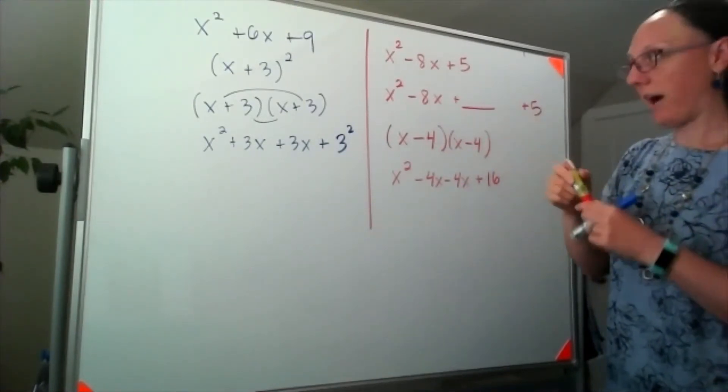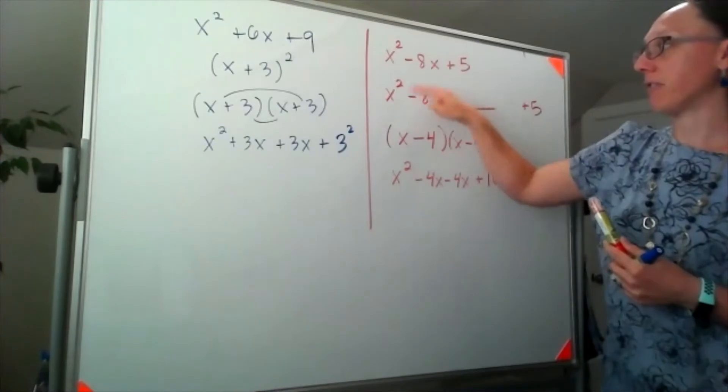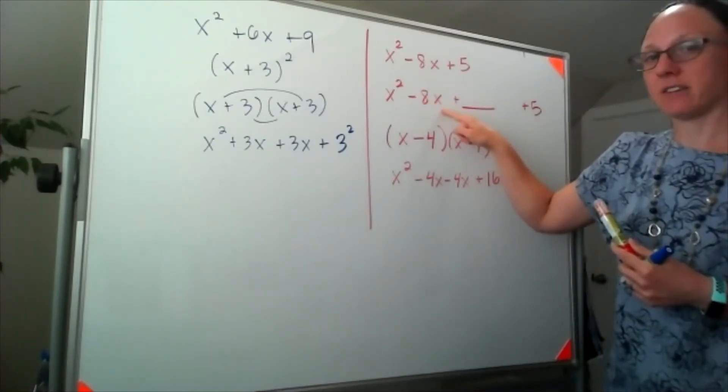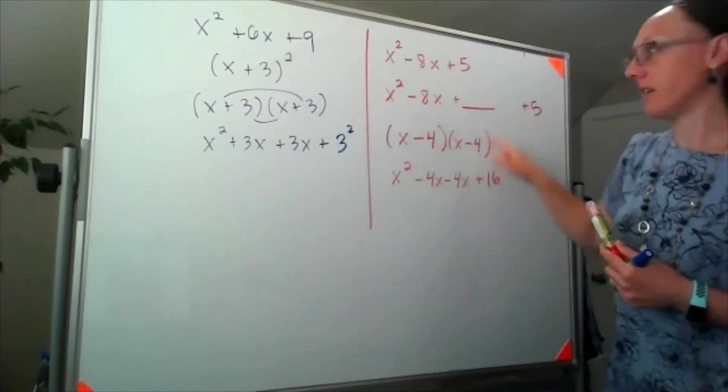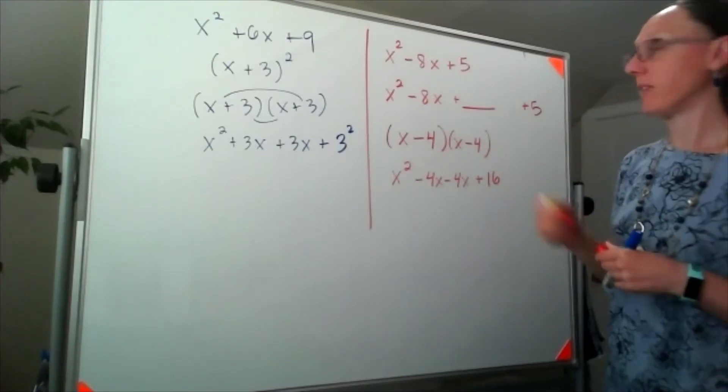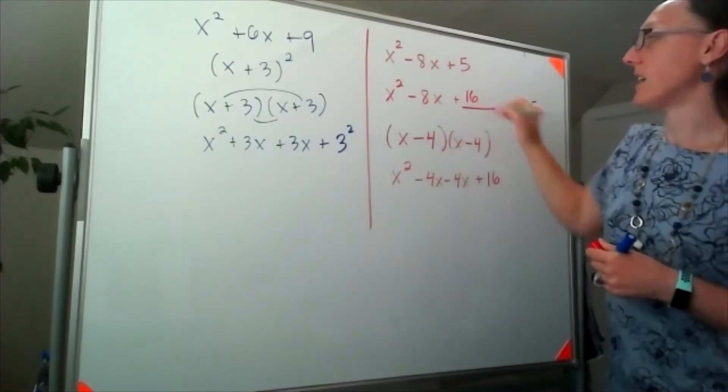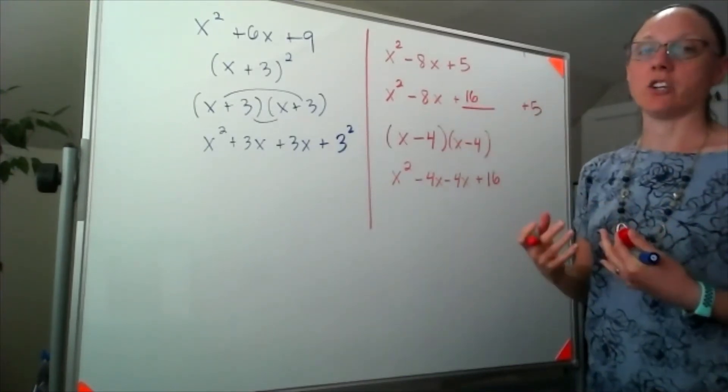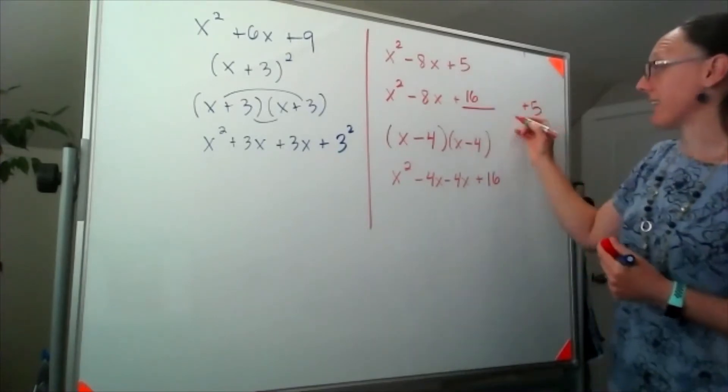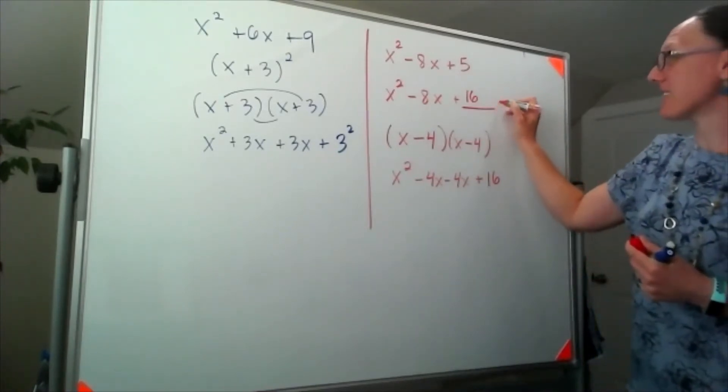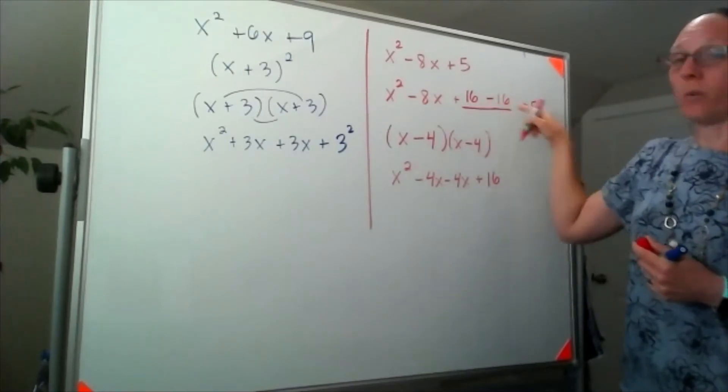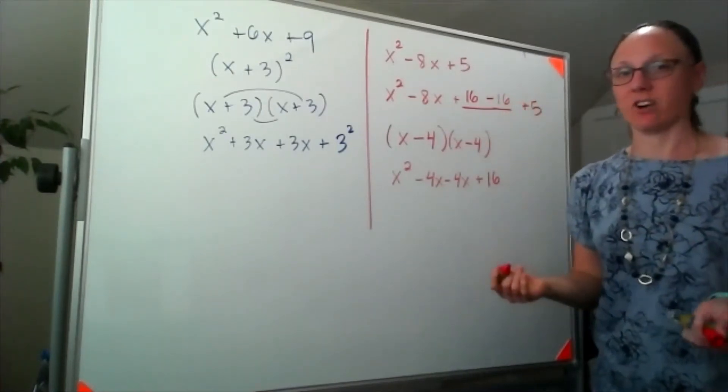So when we complete the square, we're always taking half of that coefficient in front of the x and then squaring it to get what we're adding back in, in this case, 16. In order to not change the problem, we end up adding that 16 in and subtracting it off so that what we added amounts to 0.